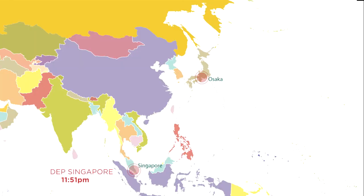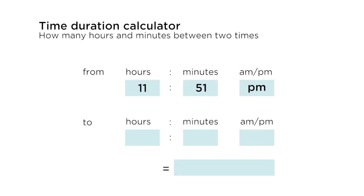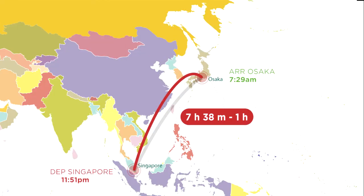A two-hour wait at Singapore before flying back to Osaka, where she lands at 7.29am. So how long is the flight? The answer given is 7 hours and 38 minutes. But Japan is one hour ahead of Singapore, so the actual flight time is 6 hours and 38 minutes.